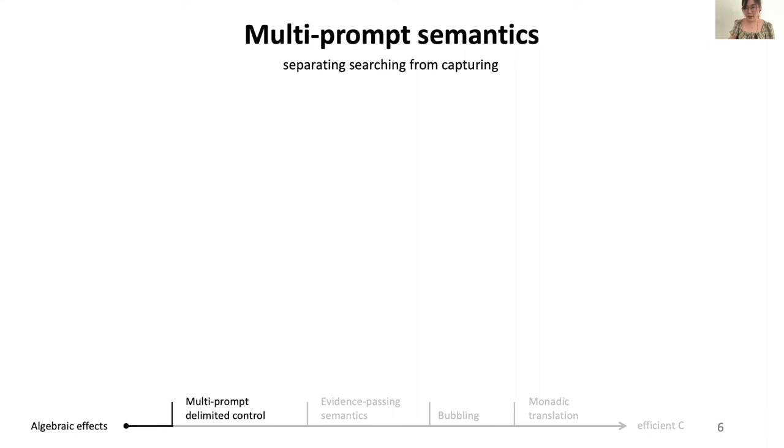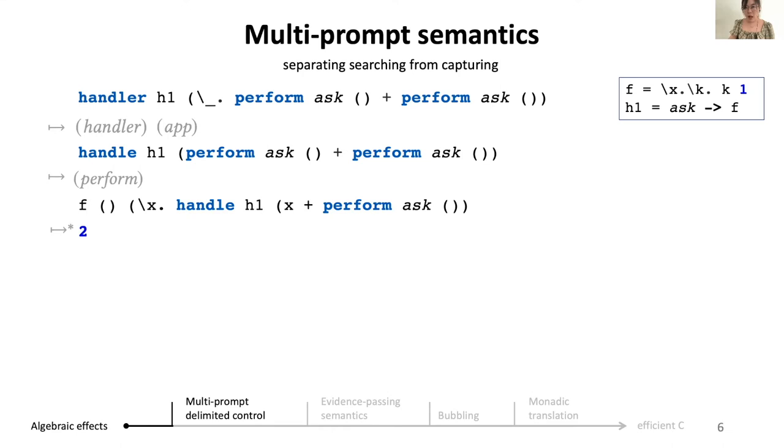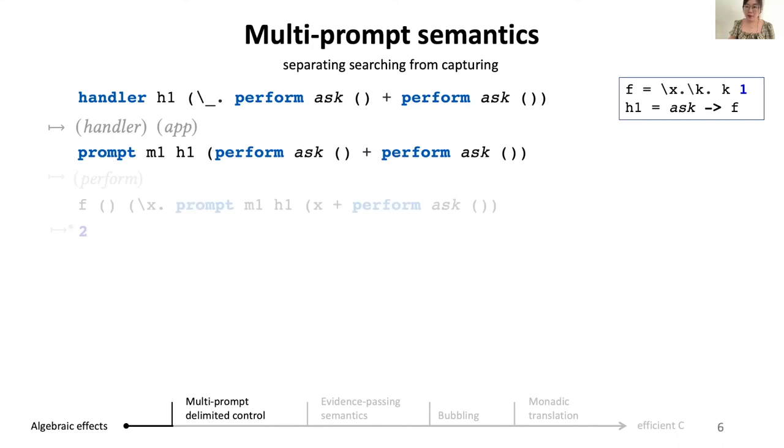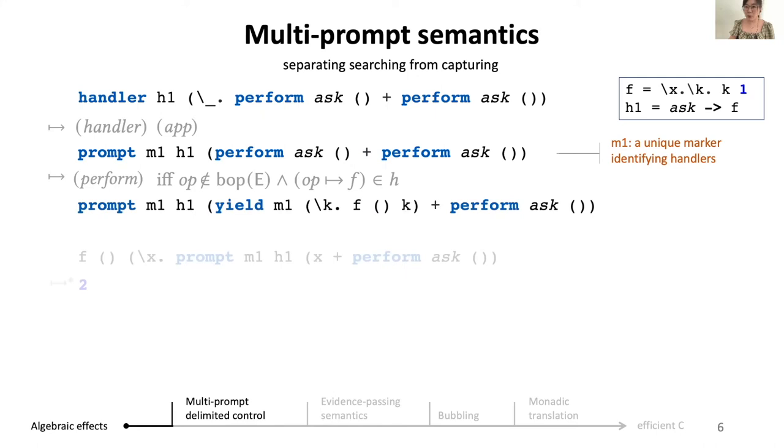To pave the way, we first apply multi-prompt semantics. We omit some less interesting details. With multi-prompt semantics, each handle is replaced by a prompt. Importantly, each prompt is associated with a fresh unique marker, in this case m1. Now when we do perform ask, we can search through the context and evaluate perform to yield m1 as we know exactly which handler to yield to. We can also apply the operation implementation to the argument and it now only waits for the resumption k. Now prompt will handle yield, where we will capture the resumption and evaluate the same expression as before, except we have replaced the handle with prompt.